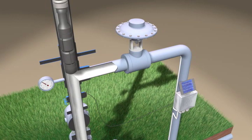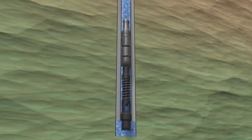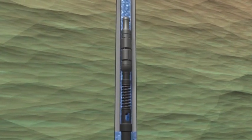The well is shut in, and the plunger travels from the surface through the fluid column to the bottom of the tubing. Time passes, allowing the casing pressure to build.